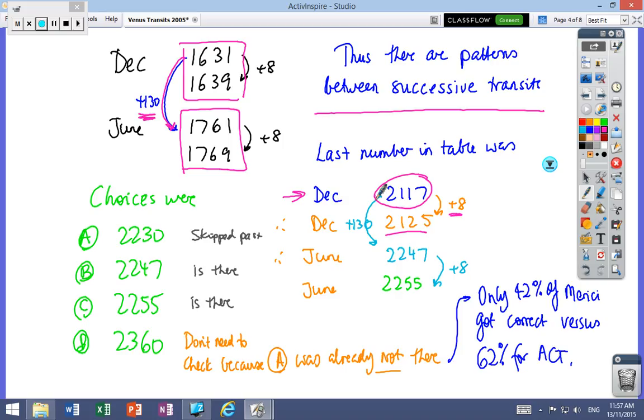Go back to 2117, add 130 years, you get 2247. Add eight years to get 2255. We should have enough information now. For instance, in question A, 2230 got skipped past when you went through the December-June. 2247 is one of the answers, 2255 is one of the answers. We could check this answer, but we don't need to because A was already not there.